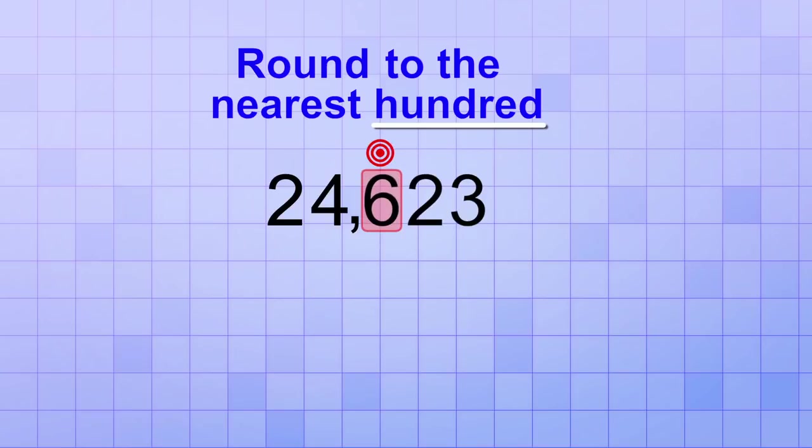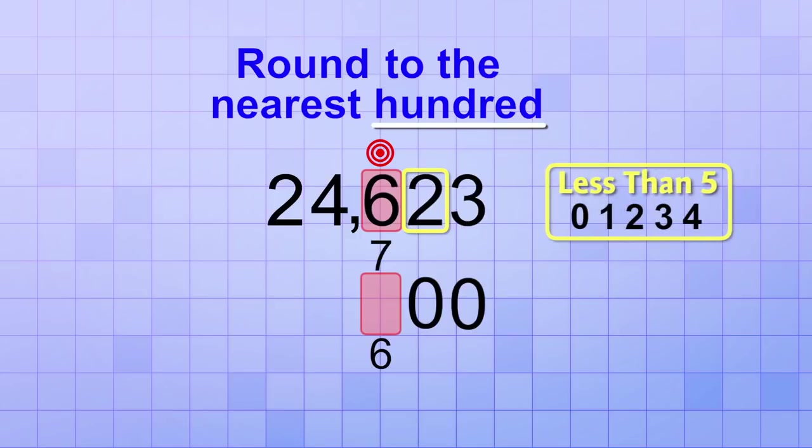And we know that any digits to the right of the target will be replaced with zeros in our rounded version. Next, let's decide what to do with the target digit. We either keep it the same, or we increase it by one. To decide, we look at the value of the next digit to the right. Since that digit is only a 2, which is less than 5, we round down, which means that we'll keep the target digit the same in the rounded number.